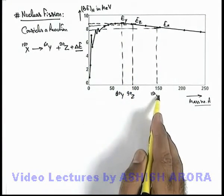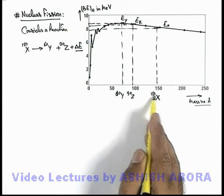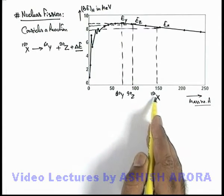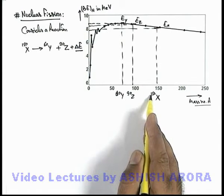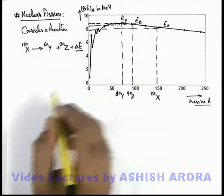If we talk about the nucleus X, there are 150 nucleons in it, and when X will split into all its nucleons, it will require total amount of energy which is equal to 150*Ex.